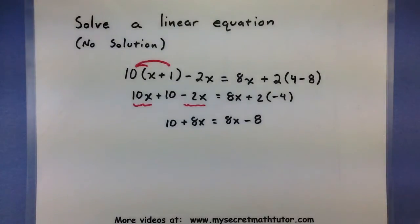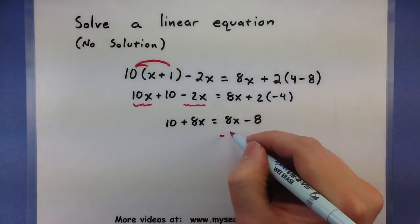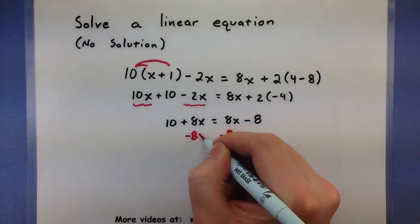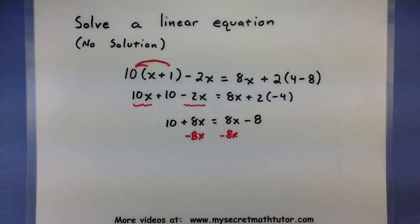Alright, now if you're looking at what we have, you might get a heads up as to what will happen. Normally, I need to get my x's together and so I'd subtract 8x from both sides. When I do that here, something interesting happens. Since both sides have an 8x, it's completely gone.